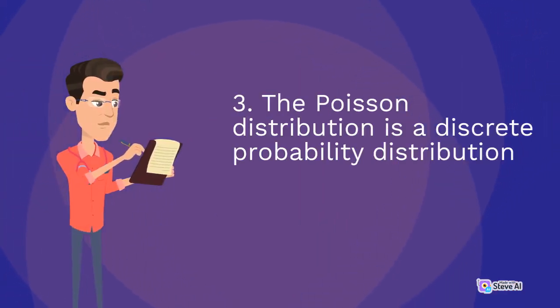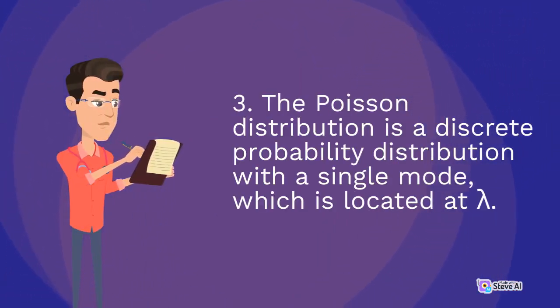3. The Poisson Distribution is a discrete probability distribution with a single mode, which is located at lambda.